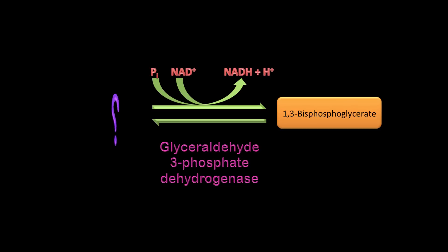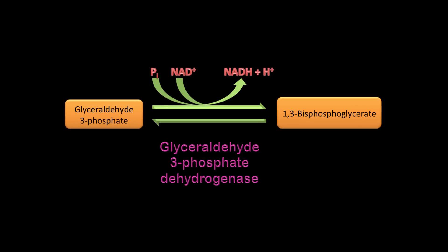On this slide you have two things happening: phosphate is being added to the substrate, and NAD+ is going to NADH. The enzyme is glyceraldehyde-3-phosphate dehydrogenase and the product is 1,3-bisphosphoglycerate. Therefore, the substrate is glyceraldehyde-3-phosphate.